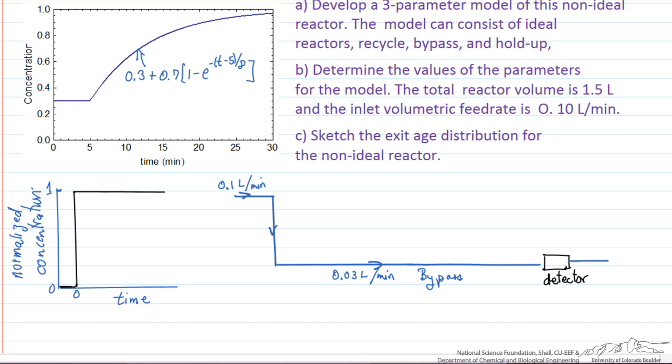So this delay time of 5 minutes is what we'd expect from a plug flow reactor. So it appears we have a plug flow reactor in series with the CSTR. The rest that's not being bypassed, that 70% first goes through a plug flow reactor, it has a residence time of 5 minutes, and then we go through a CSTR.